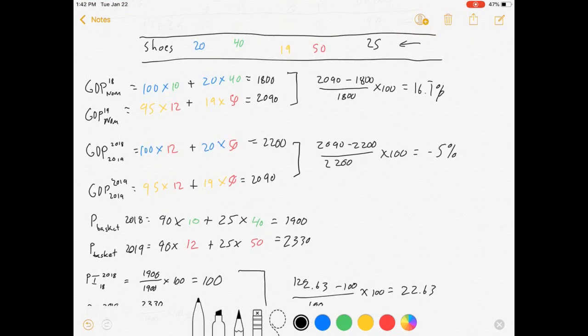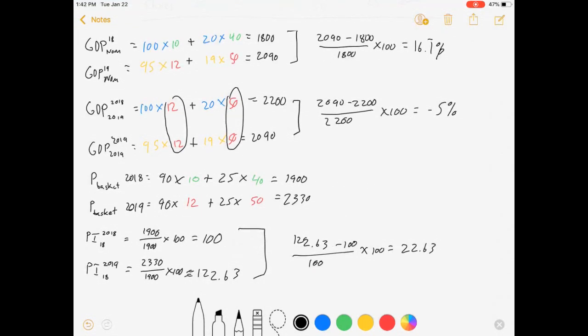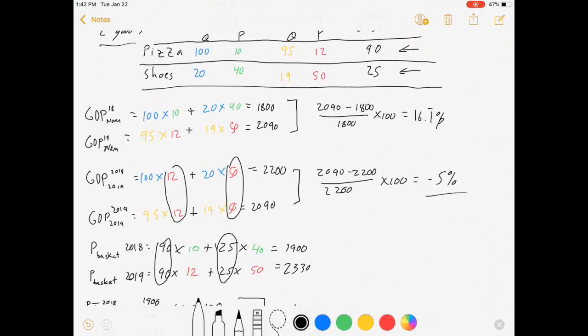So just like how real GDP held prices constant and let quantities vary, when we calculate our price indexes we use our baskets to hold quantity constant and let prices vary. And so we see that we can actually measure the real production. The real production fell by 5%, prices rose by 23%, which is why we had nominal GDP increasing.